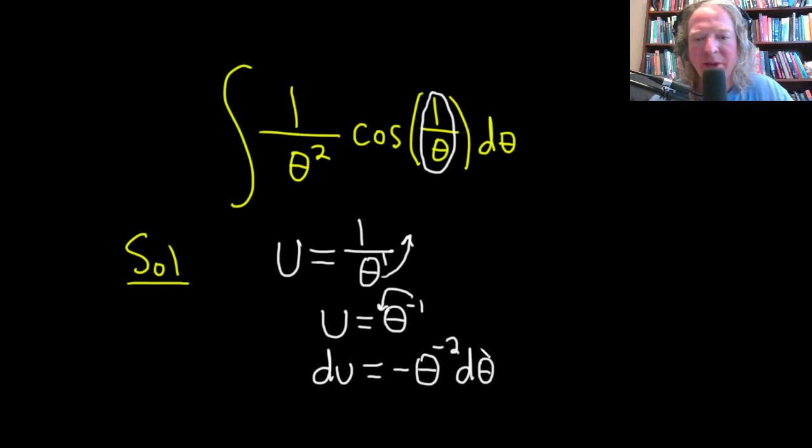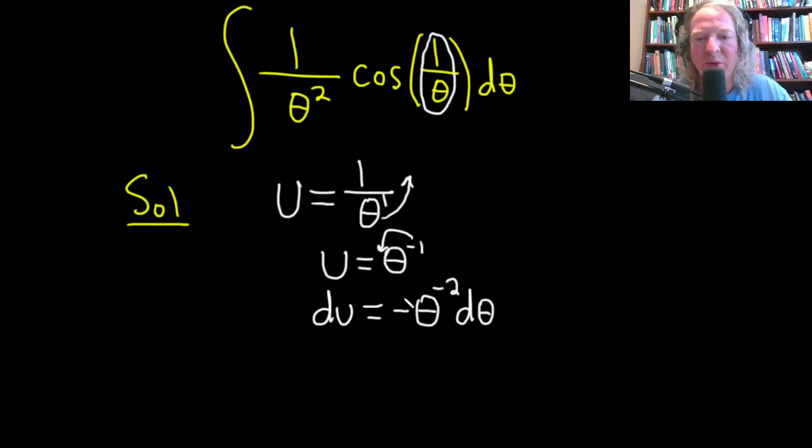And the goal is to make this look like what's in our integral. So let's go ahead and try to do that. We can start maybe by bringing this back downstairs. So this is du equals negative 1 over theta squared d theta.